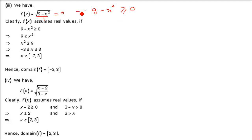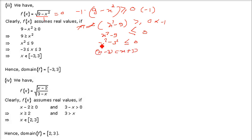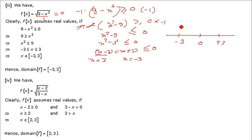So 9 minus x squared ≥ 0. To solve this, let's make it a proper quadratic. Multiply both sides by minus 1: x squared minus 9 ≤ 0 — remember, multiplying by a negative flips the inequality sign. Now factor: x squared minus 3 squared is (x minus 3)(x plus 3) ≤ 0. Set each factor to 0: x = 3 and x = minus 3. Put them on the number line: minus 3 and plus 3, giving 3 partitions.